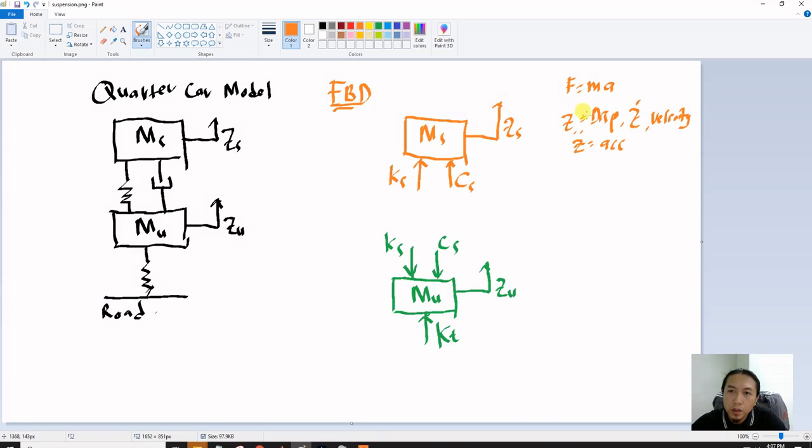So from here, so we took this one. So M times z double dot x equals to this one, k spring constant. F equals to kx. Right, so k spring constant times with the displacement. X mean displacement, so between the displacement zs minus with zu. So since upward we assume it positive, this one is positive.